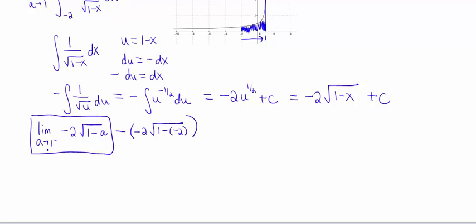All right, so as a approaches 1, the square root of 1 minus a, that's going to give us 0. Okay, so the first piece then gives us 0. And then let's look at the second piece. So negative, negative, so that's going to be plus 2 square root of 1 minus negative 2. So 1 plus 2, which is 3. Oh, look, this is a number. How about that?